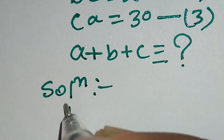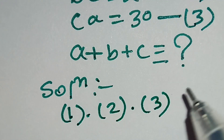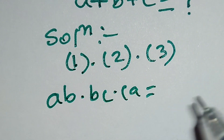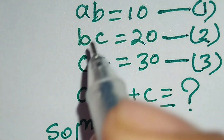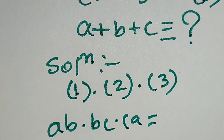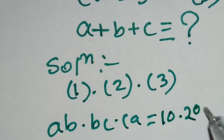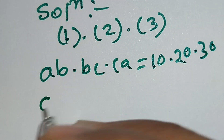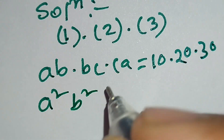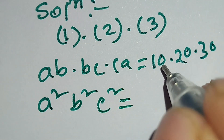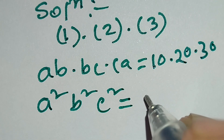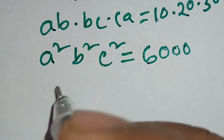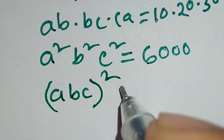Now we will multiply equations 1, 2, and 3 together. AB multiplied by BC multiplied by CA equals 10 times 20 times 30. This A and this A give A squared, this B and this B give B squared, this C and this C give C squared. So A squared times B squared times C squared equals 10 times 20 times 30, which equals 6000.